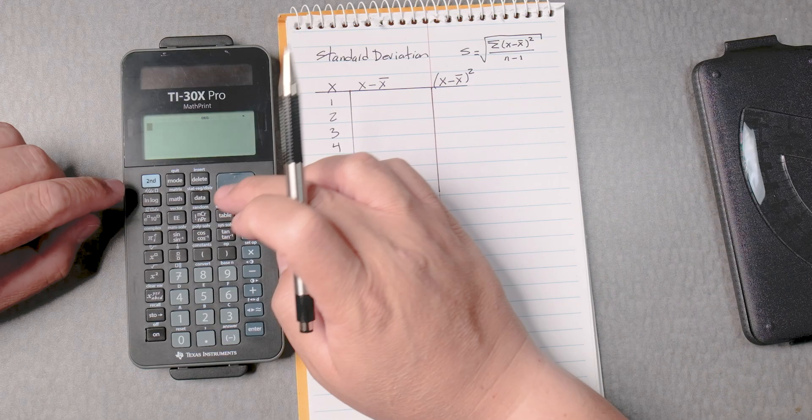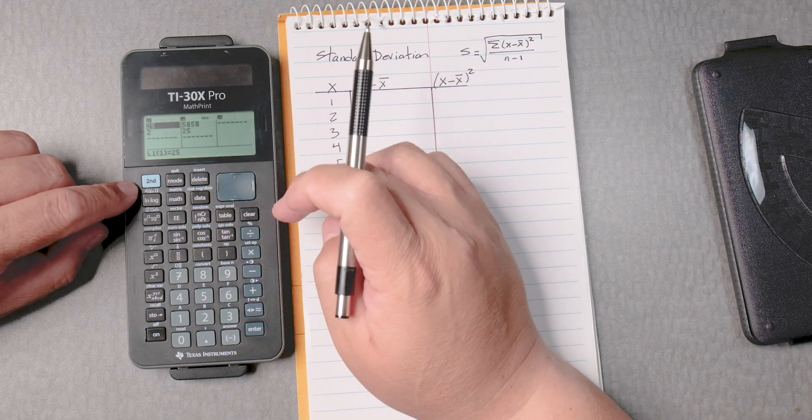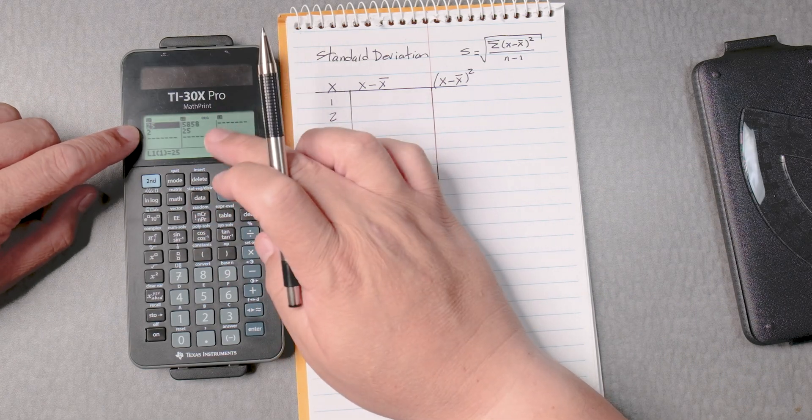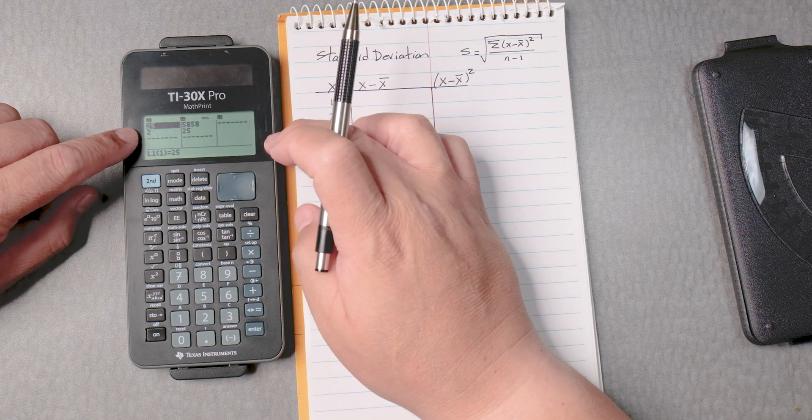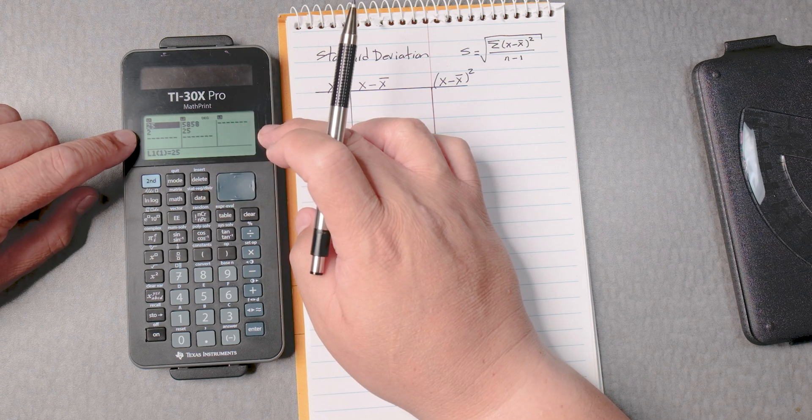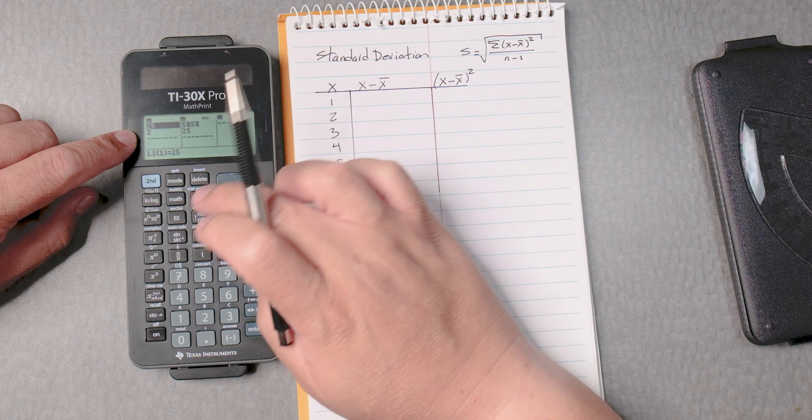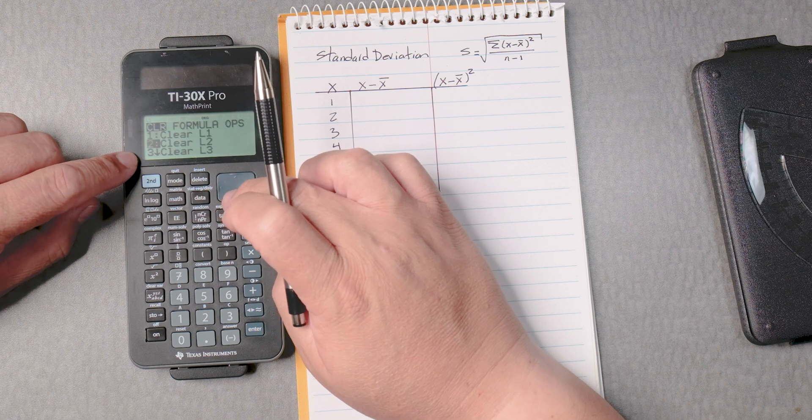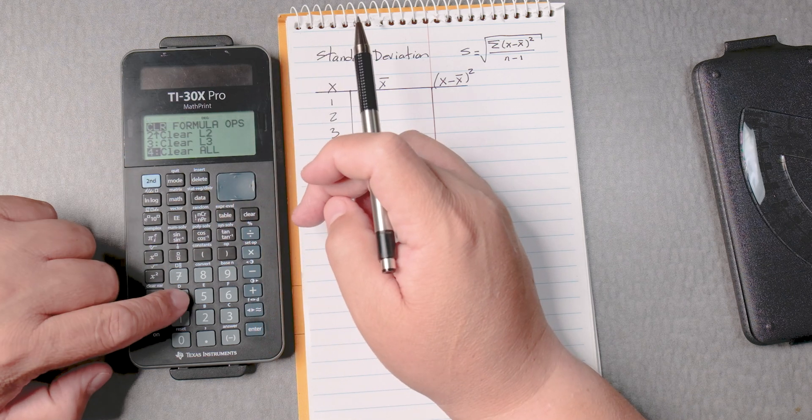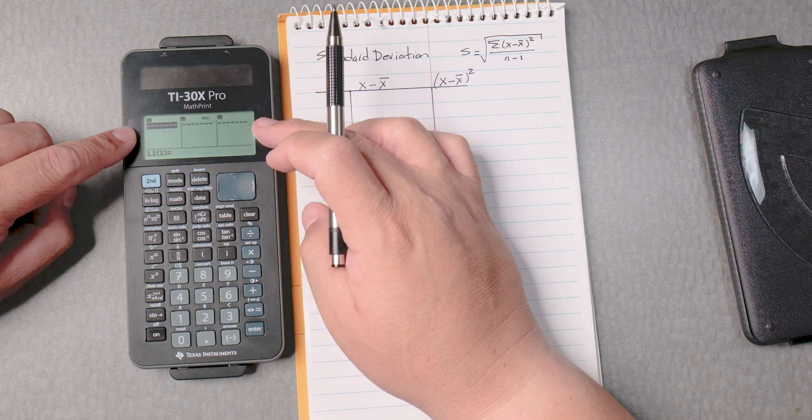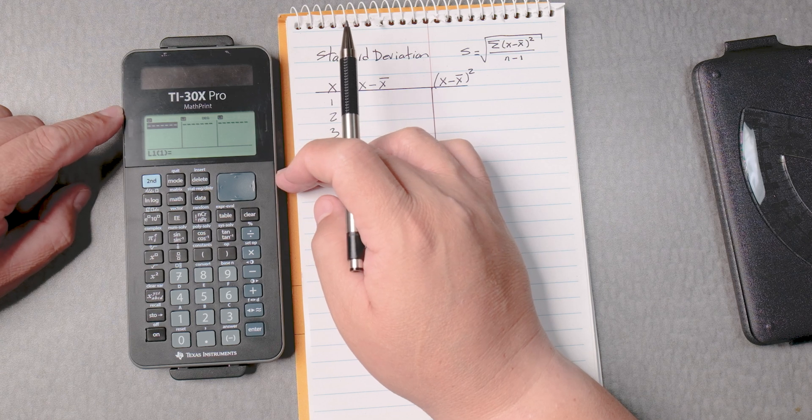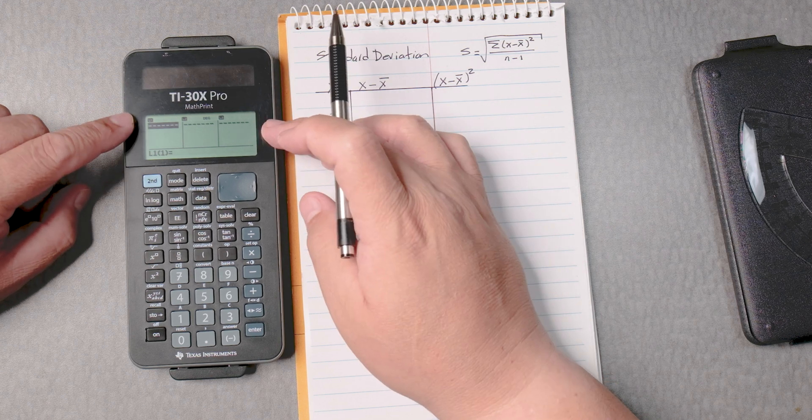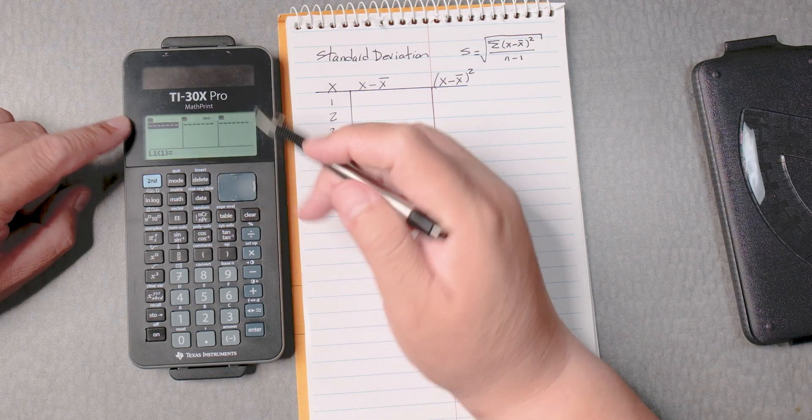So we're going to turn this on. And the first thing we're going to do is we're going to press data. We might have data points in our three lists. That's all they give us, three lists. So we can press data again and we can go all the way down to number four. So we can press four and it clears all the information on the list. It's kind of like an Excel sheet.